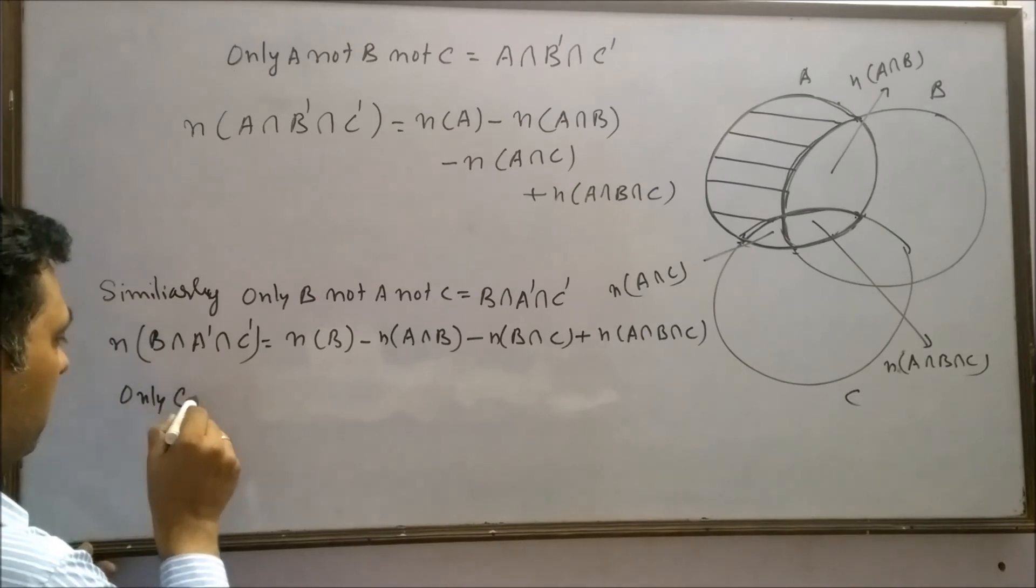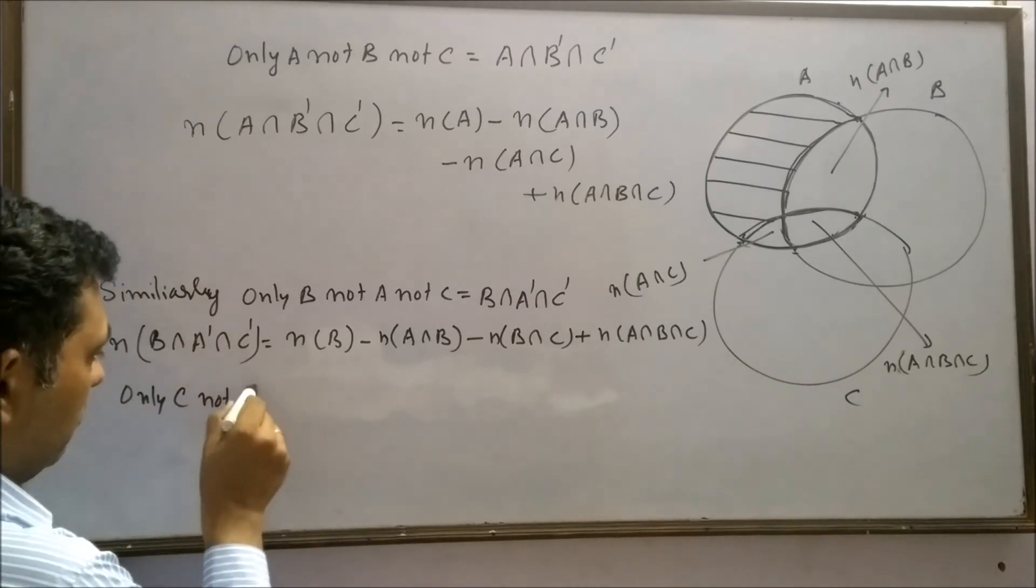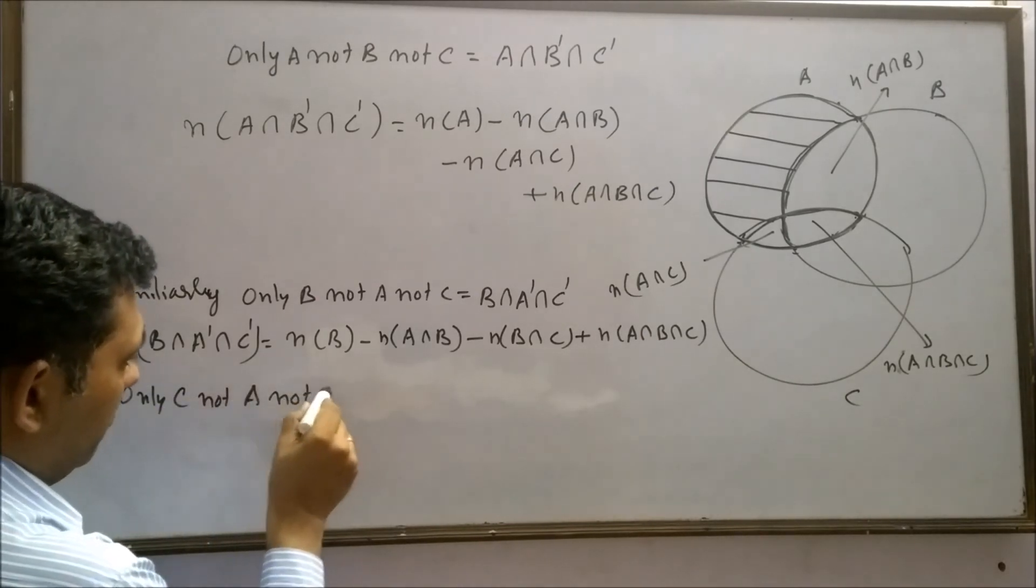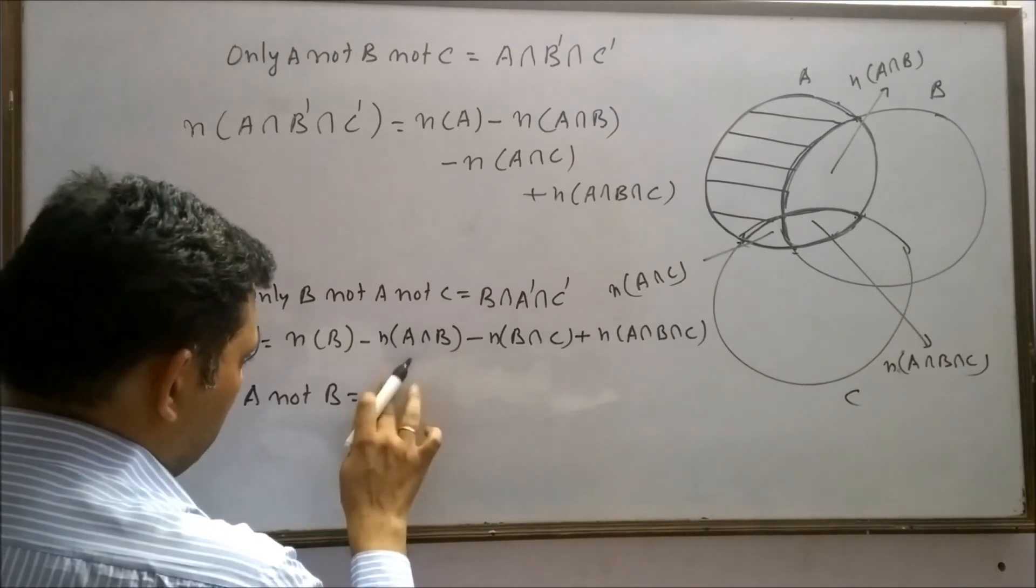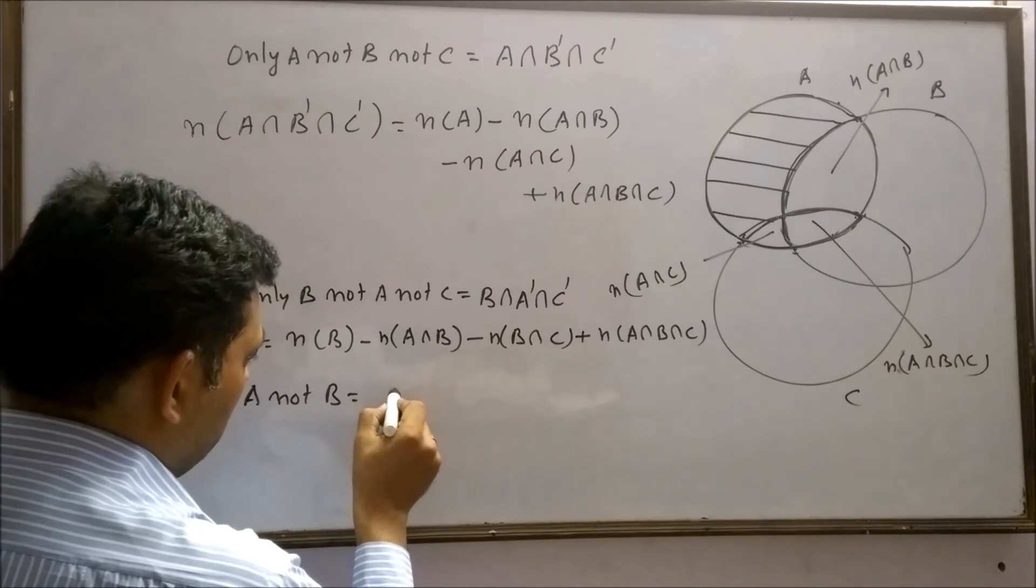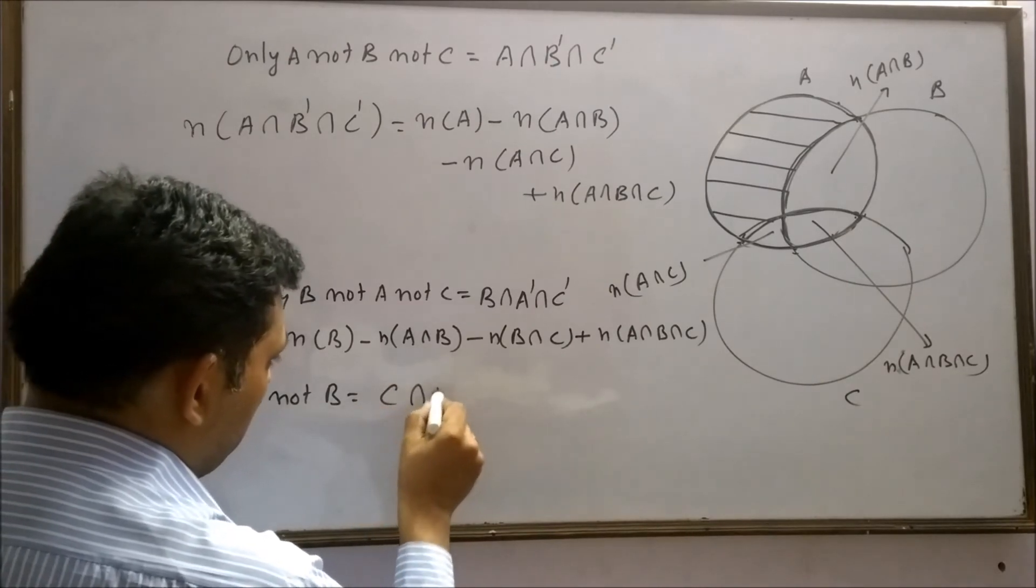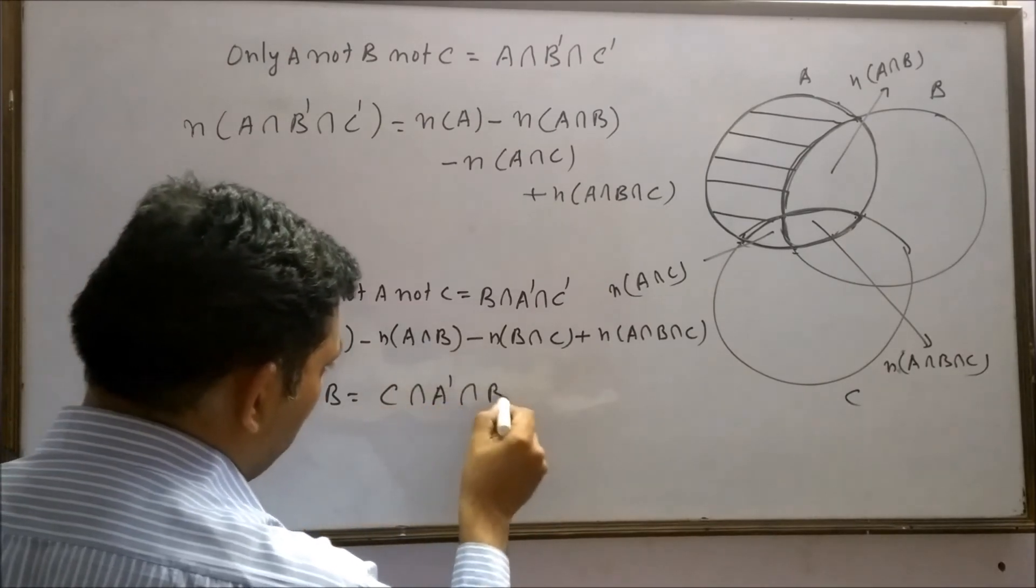Similarly, only C, not A, not B, can be written as C intersection A complement intersection B complement.